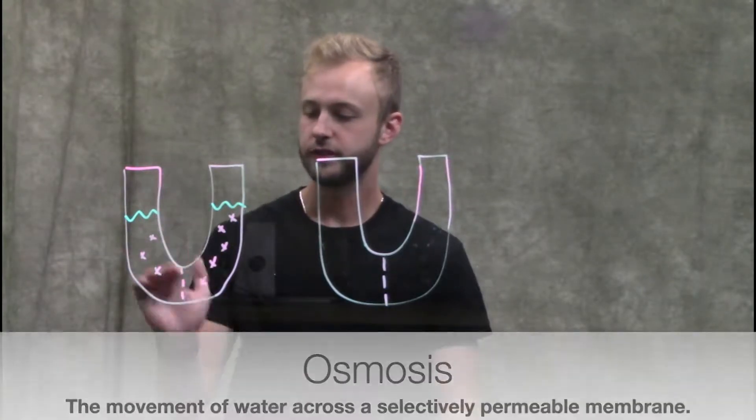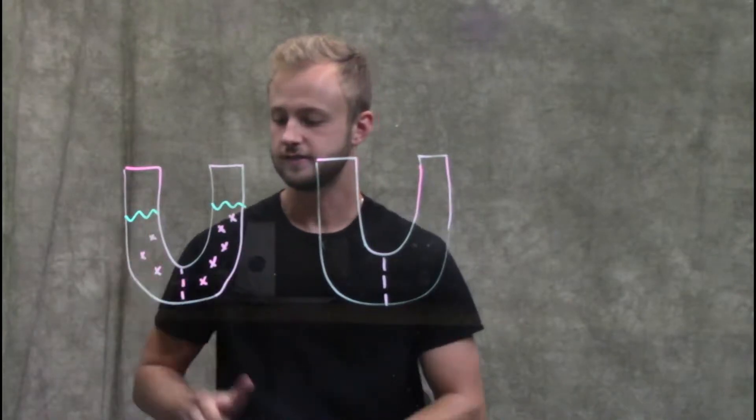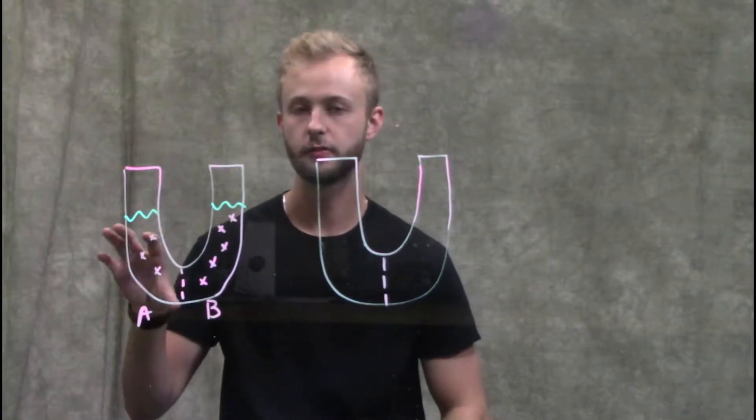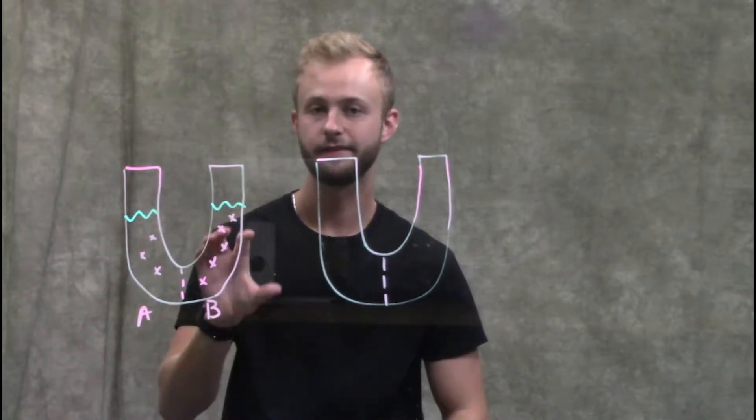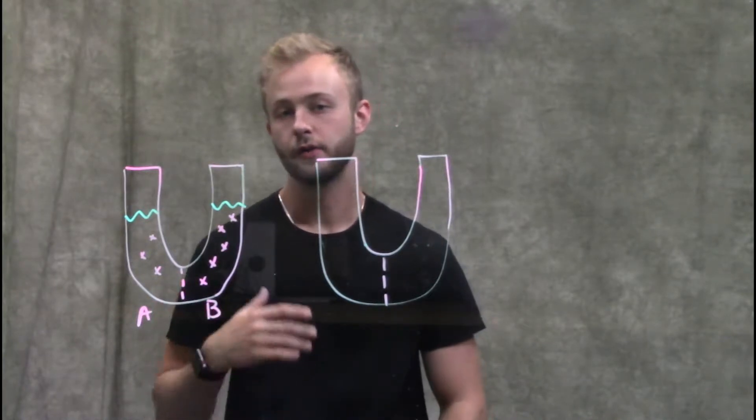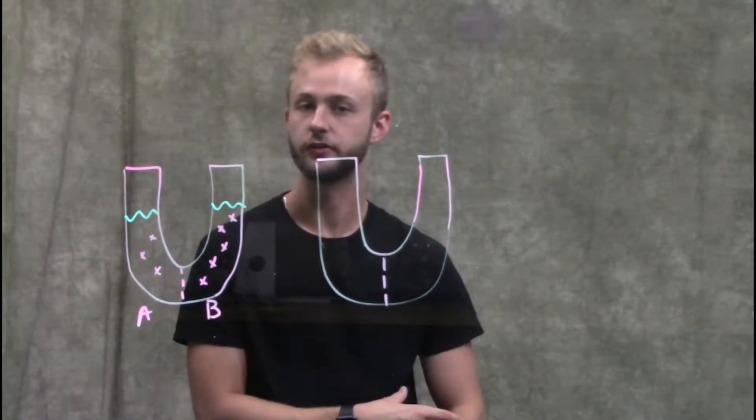Let's say we have this U-shaped tube with compartment A and compartment B. On compartment A we have three sugar molecules, and in compartment B we have five. Those two compartments are separated by a semi-permeable membrane which is permeable to water molecules but not to sugar molecules.